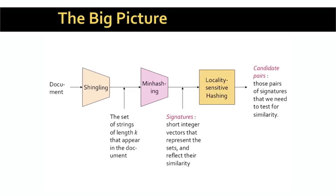But it seems we still need to compare all pairs of signatures, and that takes time that is quadratic in the number of documents. As we mentioned, even a million documents leads to half a trillion pairs of signatures to compare, and that is too much. So that's where locality-sensitive hashing comes in. We do some magic, which we'll explain soon, that allows us to look at a small subset of the possible pairs and test only those pairs for similarity. By doing so, we get almost all the pairs that are truly similar, and the total time spent is much less than quadratic.